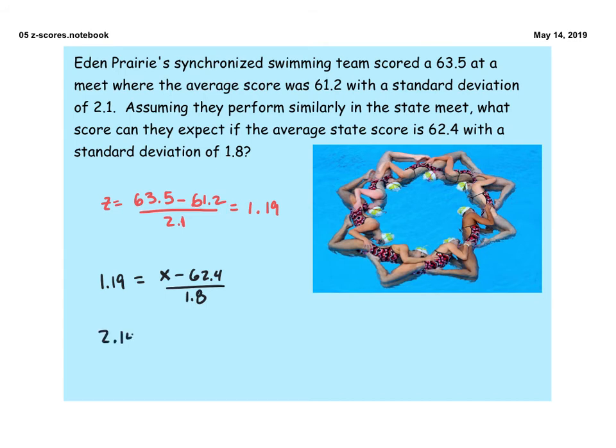So we get 2.142 equal to x minus 62.4. And to solve for x, we just simply add 62.4 to that and we get 64.542. And that's the score that they would expect to get given the previous performance at that other meet.